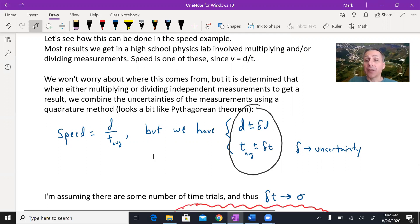Now, the result itself, the actual speed is simple. It's just the distance you measured divided by that average time. But like I like to argue with my students, that's all fine and good, and it's very easy to get that result. But the most important part of this is, what's the uncertainty?